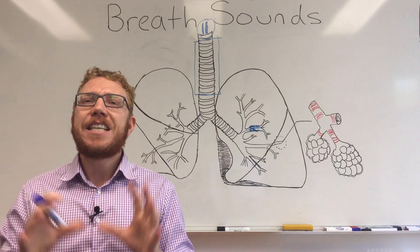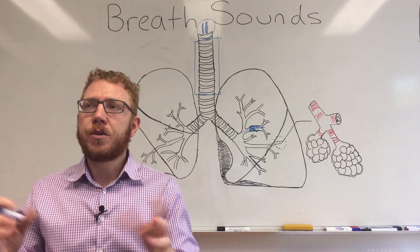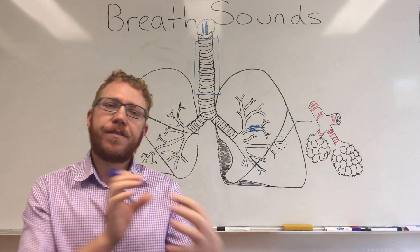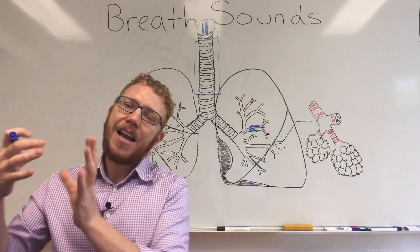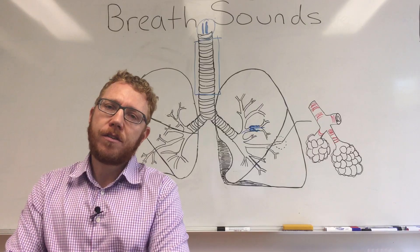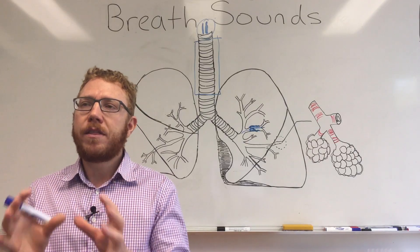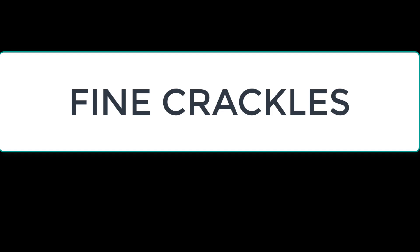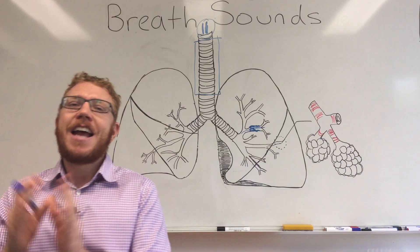Moving into the third abnormal breath sound: crackles. These are non-continuous, unlike wheezing and stridor — more like explosive popping, more commonly on inspiration. They can be broken down into fine crackles, sometimes called rales, and coarse crackles, sometimes called crepitations. Let's listen to fine crackles first, then coarse crackles.